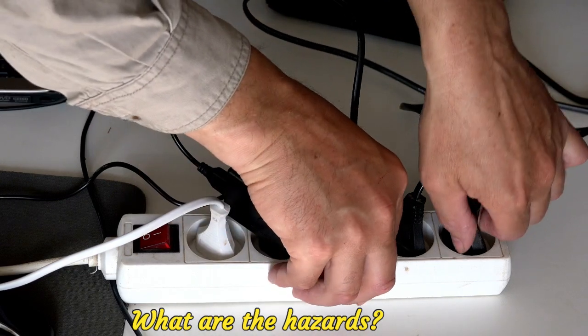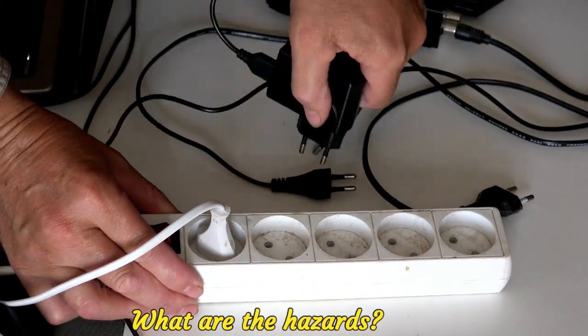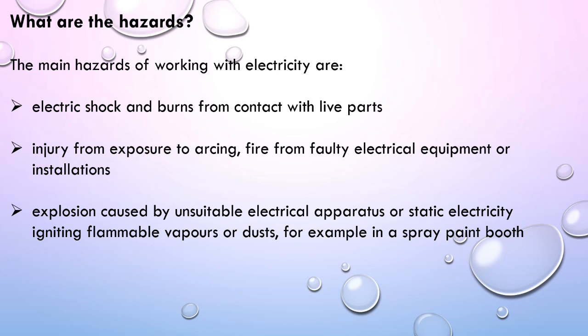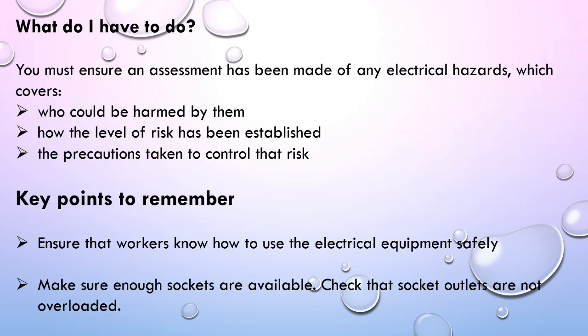The main hazards of working with electricity are: electric shock and burns from contact with live parts, injury from exposure to arcing, fire from faulty electrical equipment or installations, and explosion caused by unsuitable electrical apparatus or static electricity igniting flammable vapors or dust — for example in a spray paint booth. You must ensure an assessment has been made of any electrical hazard, covering who could be harmed, how the level of risk was established, and the precautions taken.